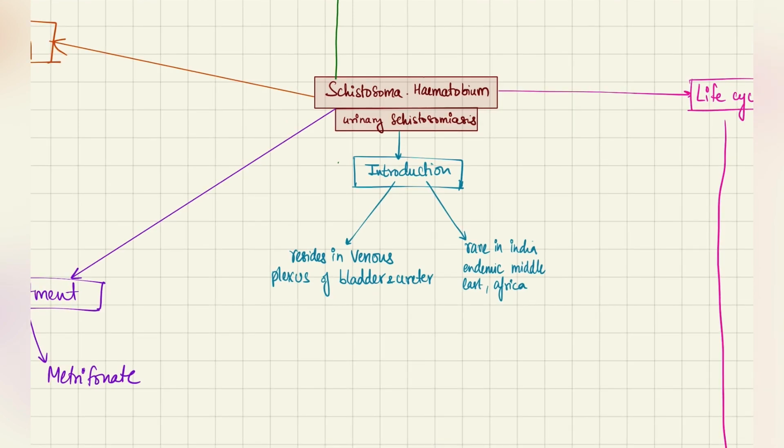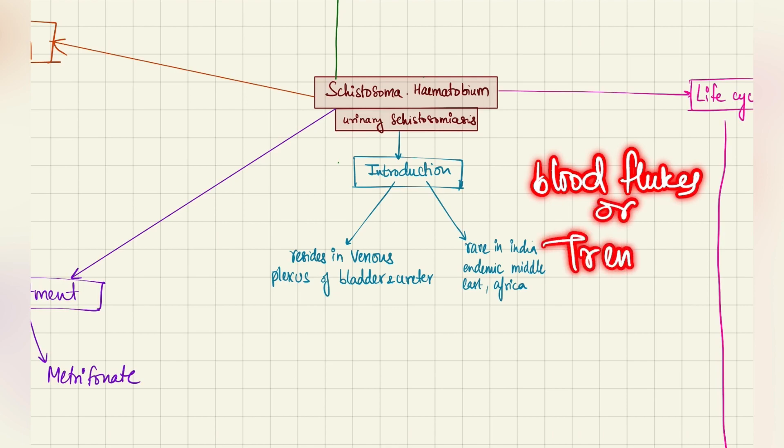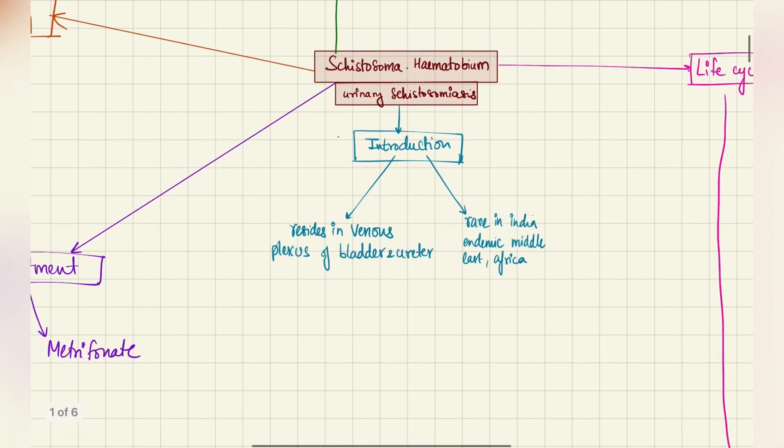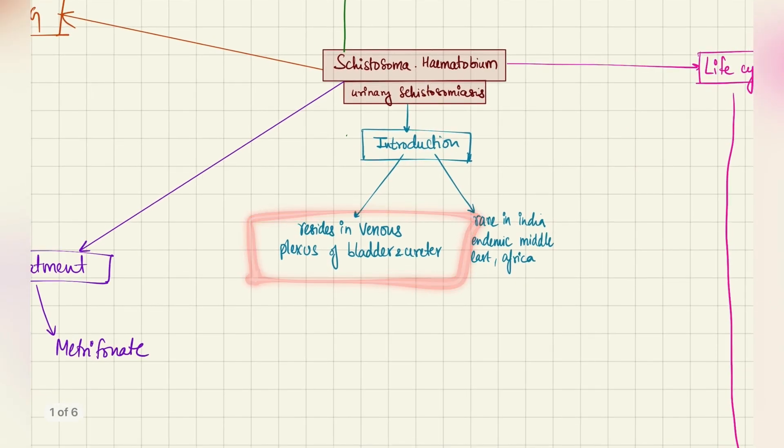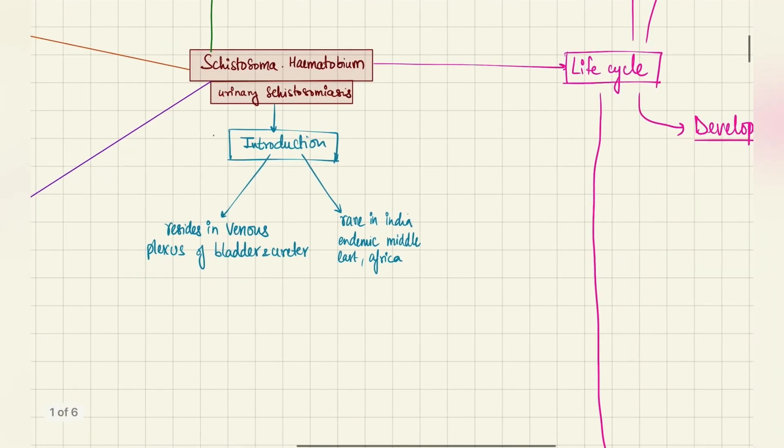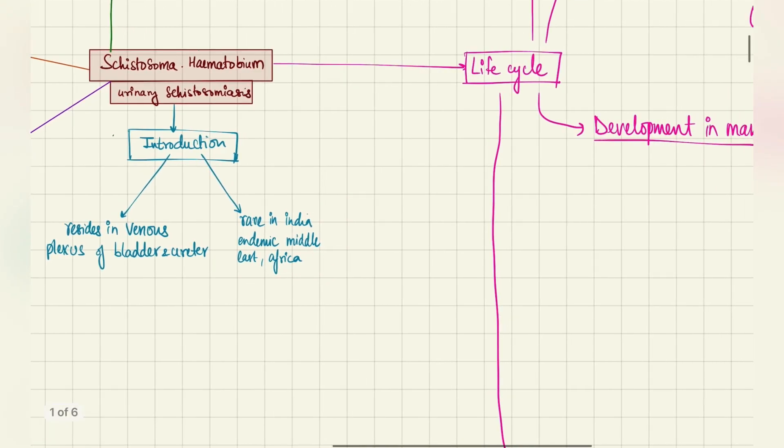Let's get started with the introduction. Schistosoma haematobium is broadly classified under the blood flukes or the trematodes. Something else about it is that it resides in the venous plexus of the bladder and ureter. This is very important because this is part of the life cycle as well. Epidemiologically, it is rare in India and endemic to the Middle East and Africa. This is not that important for your exams though.